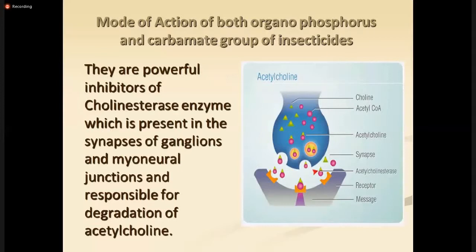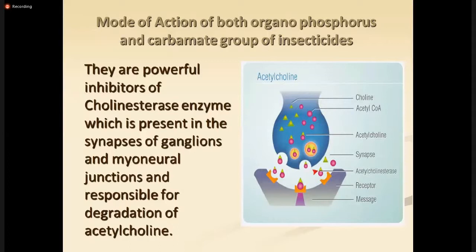Regarding the mode of action: acetylcholine is a neurotransmitter that affects the pre-ganglionic and post-ganglionic parasympathetic synapses — this is the muscarinic action. It also affects the sympathetic pre-ganglionic synapses including the adrenal medulla, which involves nicotinic receptors. Acetylcholine is also a transmitter in the CNS. At the synapse, acetylcholine is hydrolyzed by the enzyme acetylcholinesterase, present at ganglia and myoneural junctions, responsible for degradation of acetylcholine into choline and acetic acid.